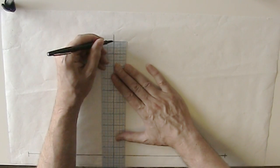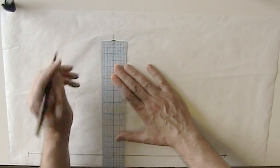Remember when we drafted the back, we subtracted a quarter. And that's because I want the front bodice to be slightly wider than the back bodice. Again, you can leave that step out, but I don't recommend it.